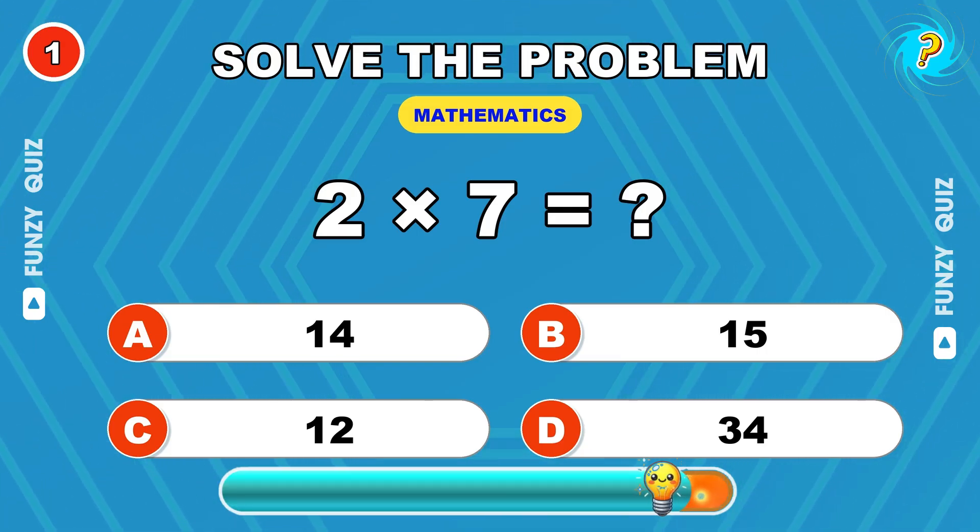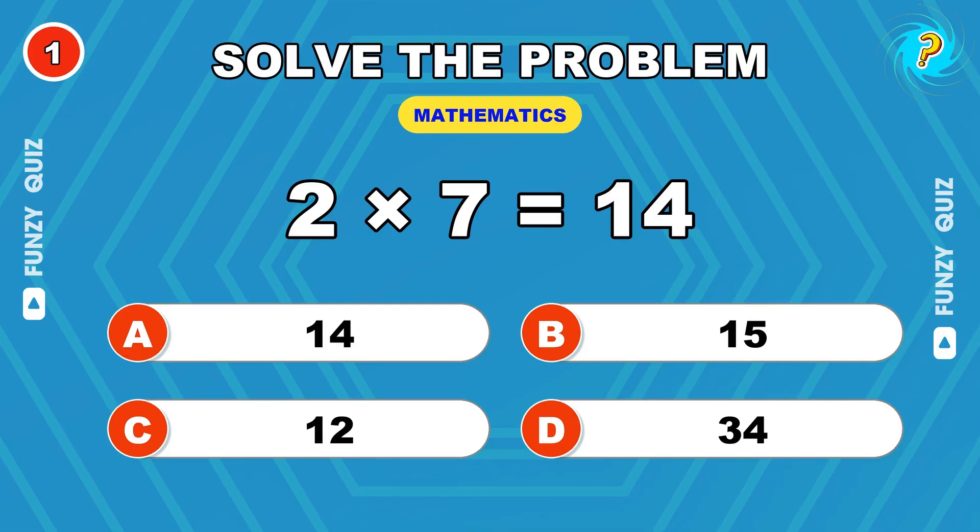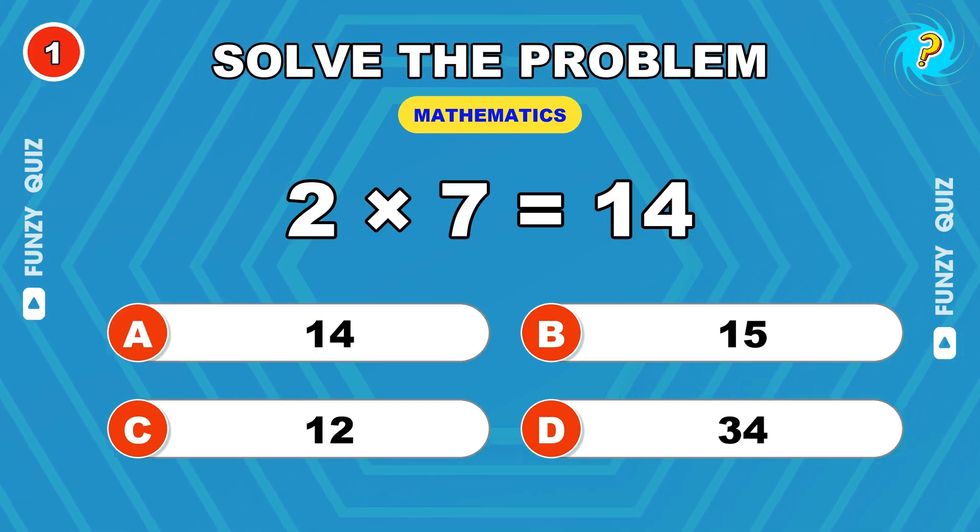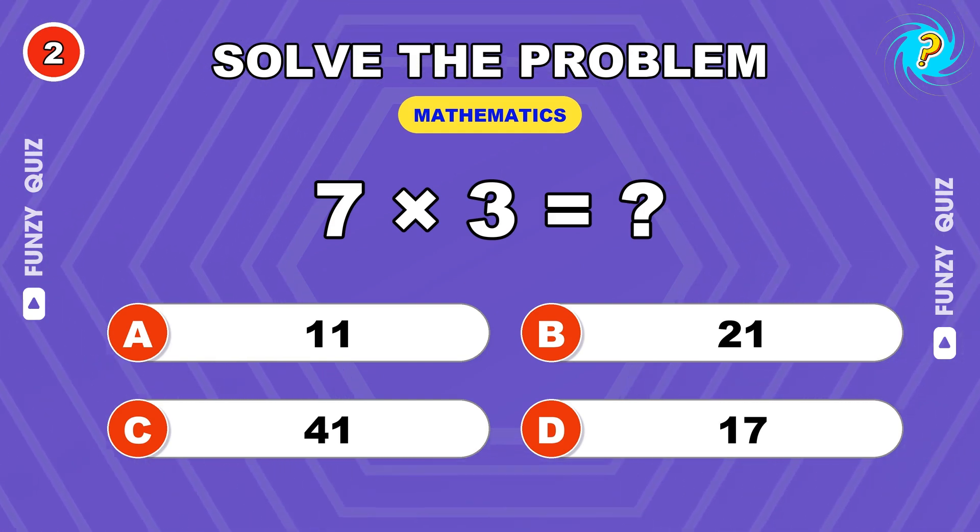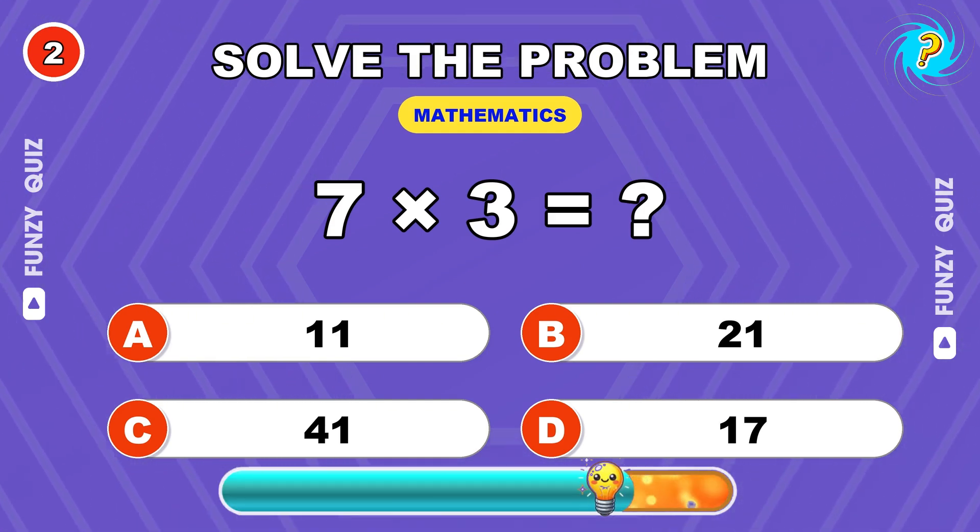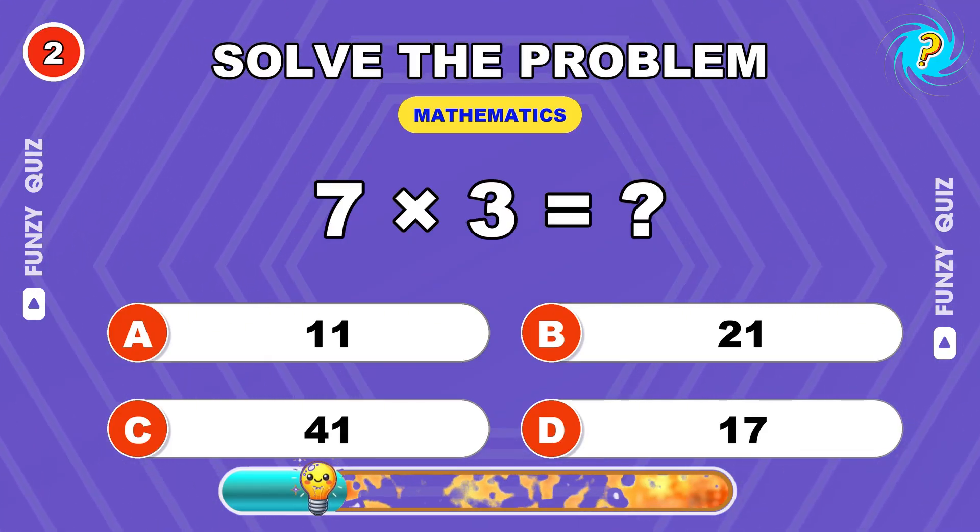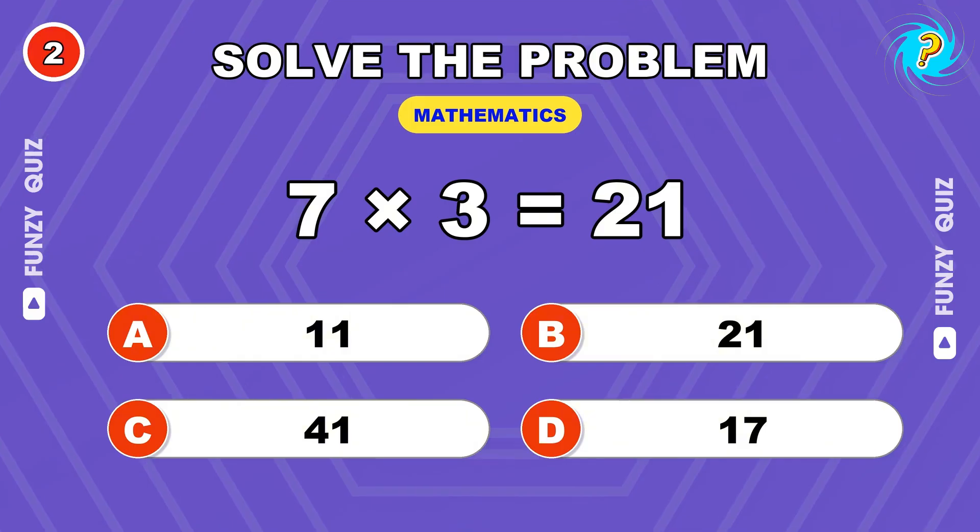What's 2 times 7? 14. Here's number 2. 7 times 3. 21.